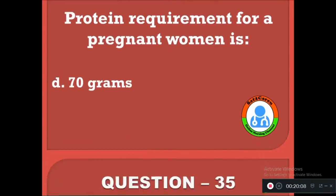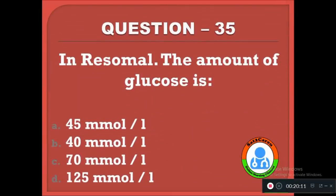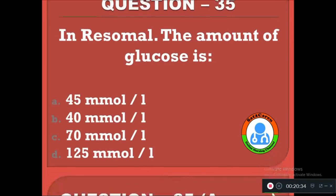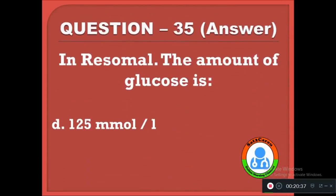Question 35: In ReSoMal (a type of advanced oral rehydration solution), the amount of glucose is — option A: 45 mmol/L, B: 40 mmol/L, C: 70 mmol/L, D: 125 mmol/L. The correct answer is D, 125 mmol per liter. Among all the compositions in ReSoMal, the glucose concentration is very high at 125 mmol per liter.